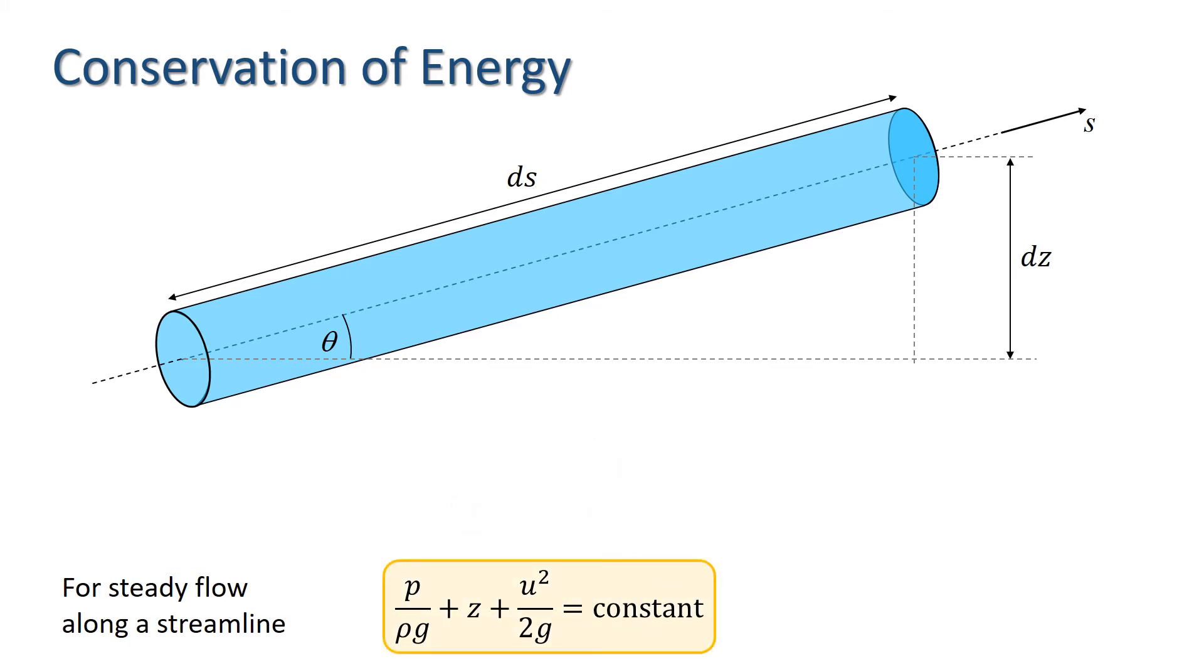This is known as the Bernoulli equation, and it describes conservation of energy along a streamline.